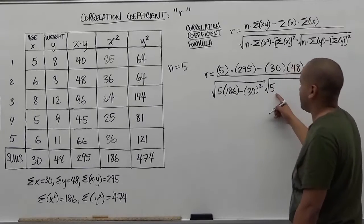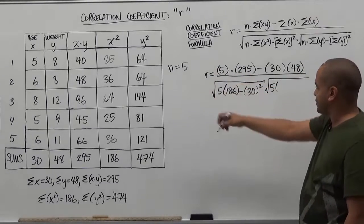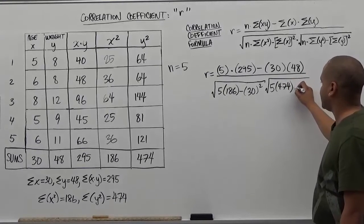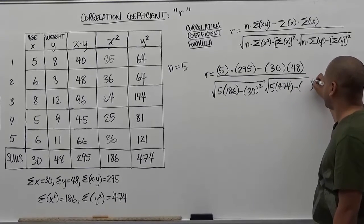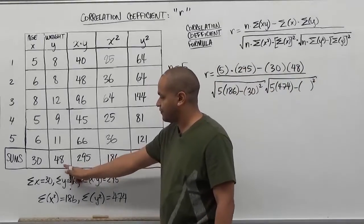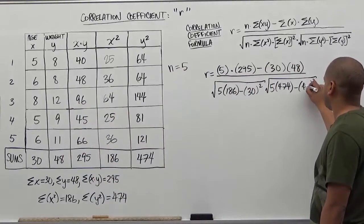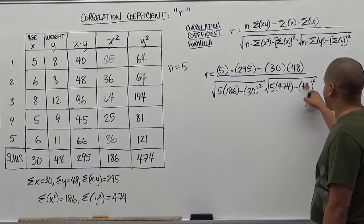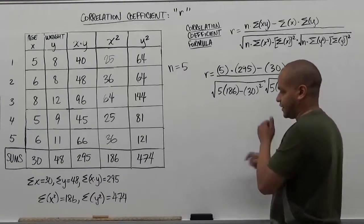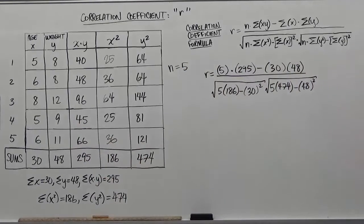For the second half of the denominator, we're going to do the same thing but in terms of y. We have the number of samples, which is 5, times the sum of y squared, which is 474, minus the sum of y being squared. The sum of y being squared will be 48 squared. Be careful not to confuse y squared — the sum of y squared — with the sum of y being squared.